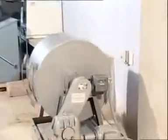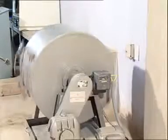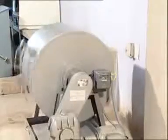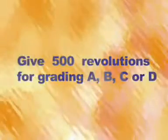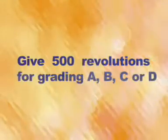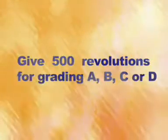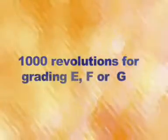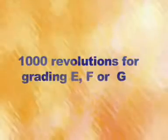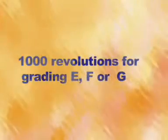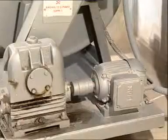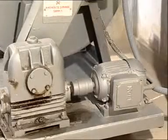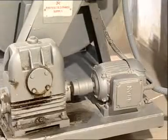Allow the machine to run at a speed of 30 to 33 revolutions per minute. Give 500 revolutions for grading A, B, C or D, and 1000 revolutions for grading E, F or G. Since we are using grading B, we will subject the sample to 500 revolutions.